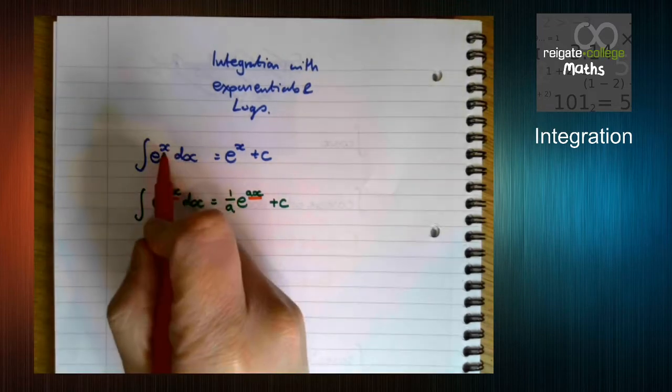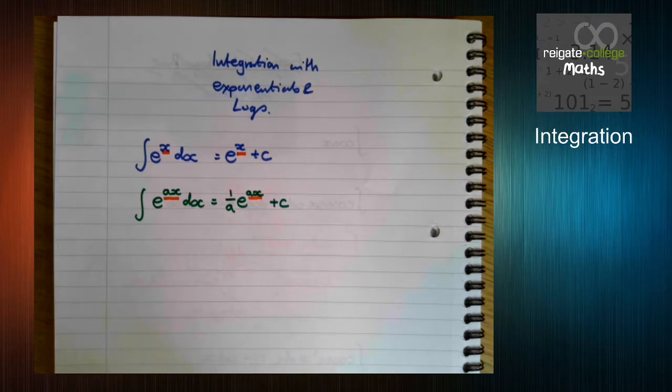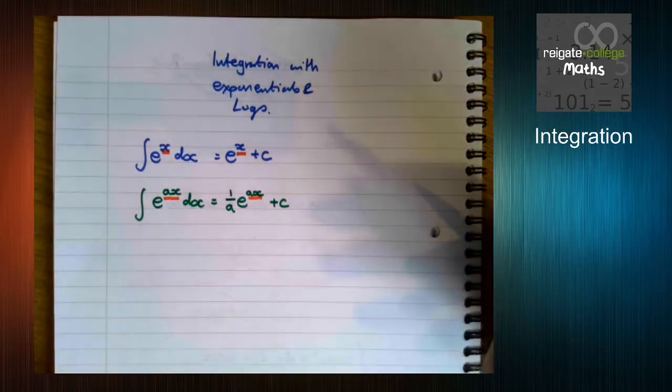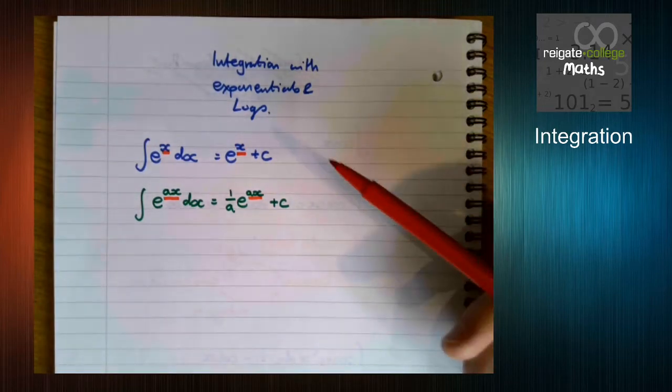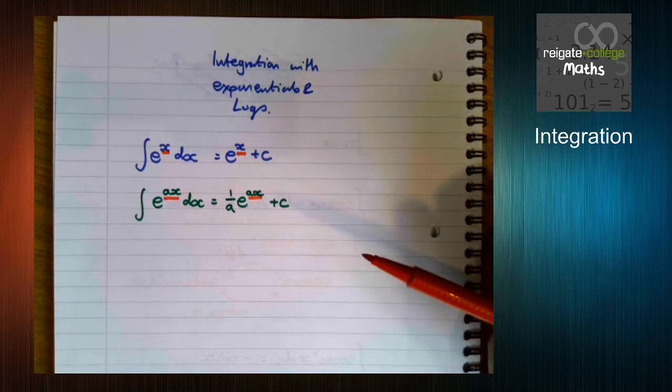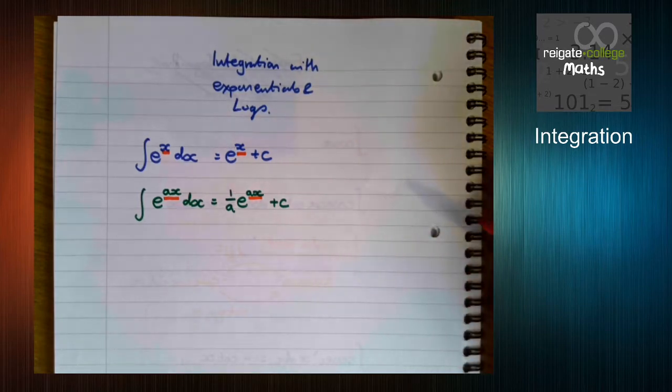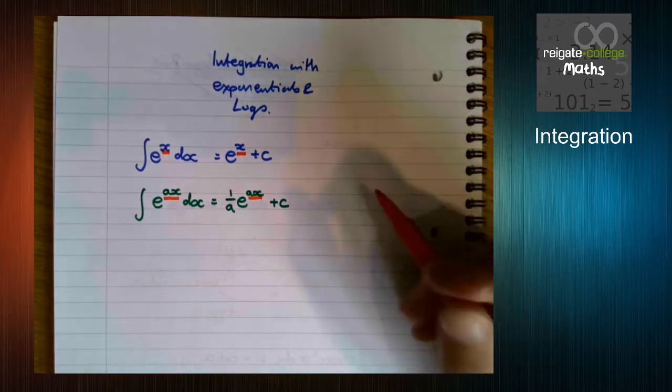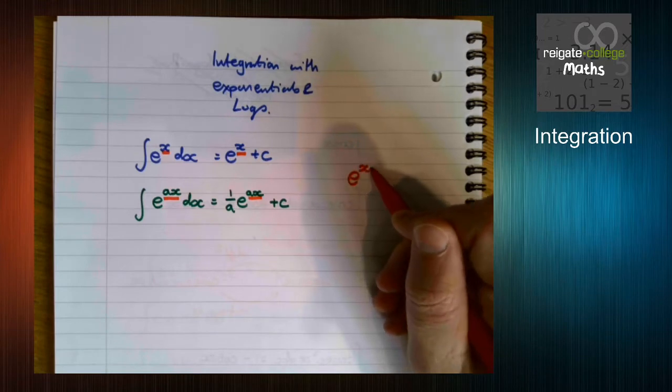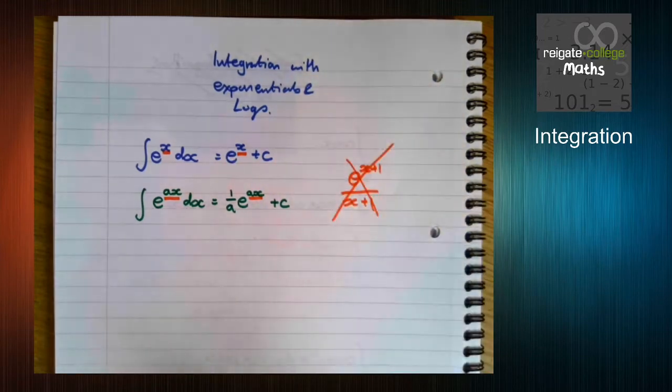This is a typical error that students make. They get used to doing, oh, you increase the power by one, divide by the new power. Oh, we've got a power, so that rule applies. That's not the case. Exponentials behave in their own way. So it's not that. That is not correct. So don't start doing that.